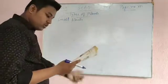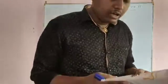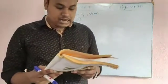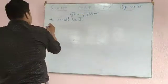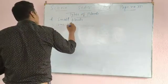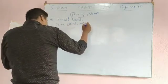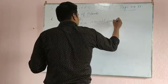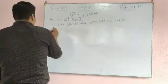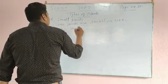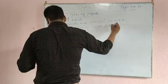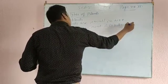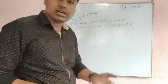Some plants are small in size, like rose, sunflower, mint, and coriander plants. You can see the rose plant, sunflower plant, and coriander plant. Coriander is a plant which is also used in our vegetables.